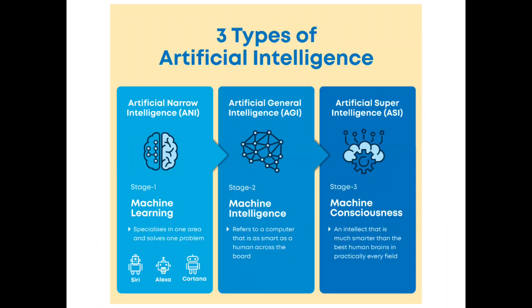There are three types of artificial intelligence: artificial narrow intelligence, artificial general intelligence, and artificial super intelligence.